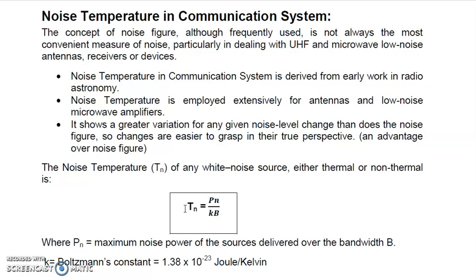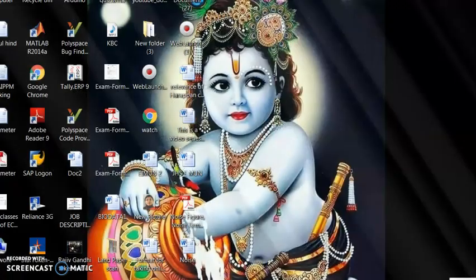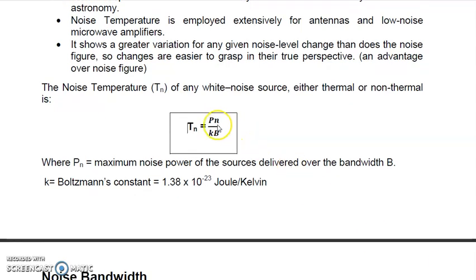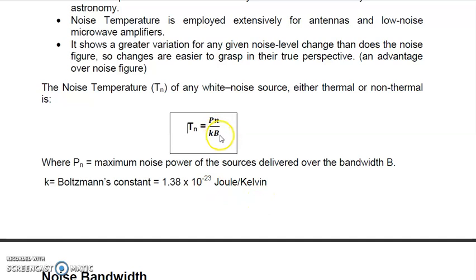The formula of noise temperature is: T = Pn / (K × B), where Pn is the maximum noise power of the source delivered over the bandwidth B. K is the Boltzmann constant having the value 1.38 × 10⁻²³ joules per Kelvin. B is the bandwidth of the signal which is passing through the receiver or caught by the antenna. This is the formula through which noise temperature can be calculated.